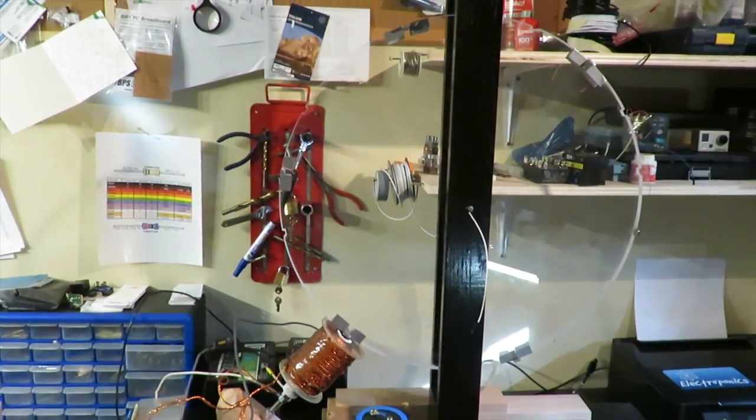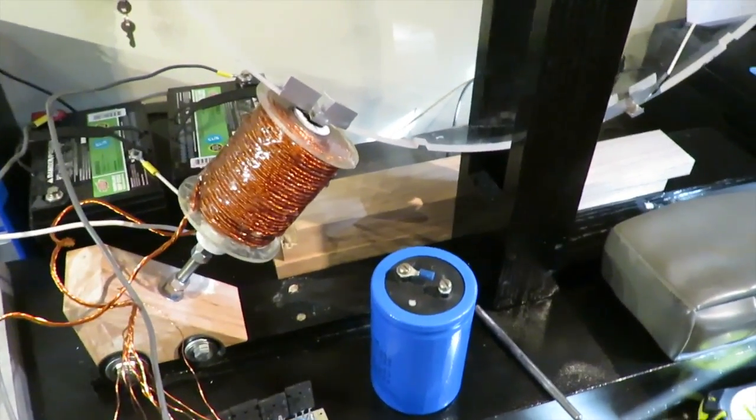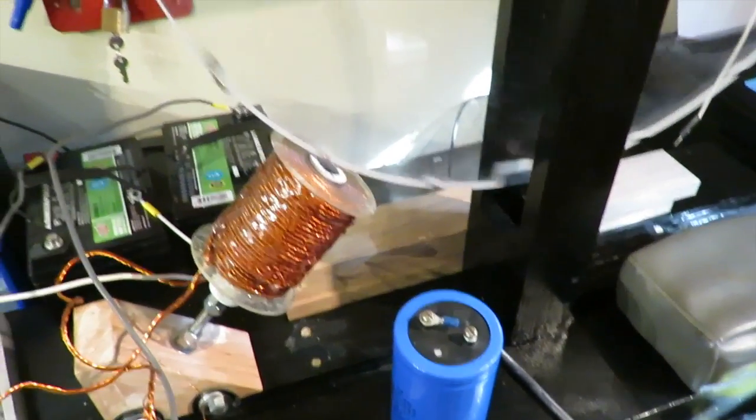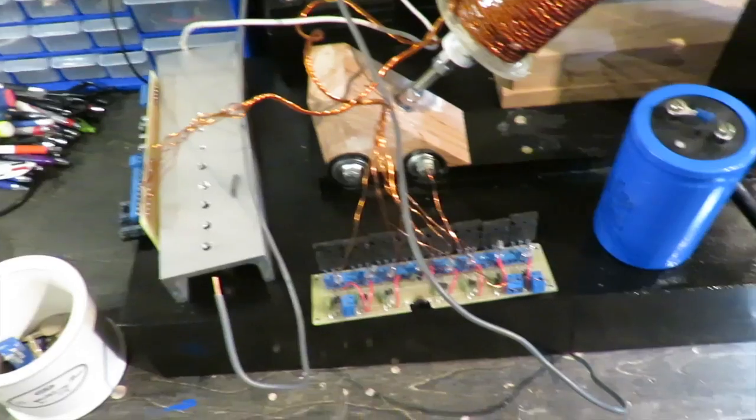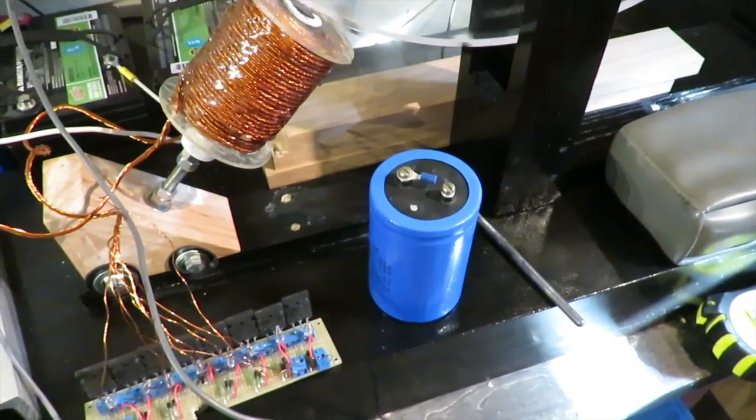This is the large Bedini motor that is going to charge this capacitor here. When the magnets go by the coil, the field collapses and the energy is recycled through the transistors into this capacitor.